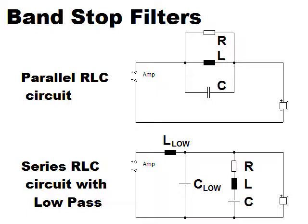A parallel RLC circuit only works as a bandstop filter if it is connected in series with the driver. A series RLC circuit only works if it is connected in parallel to the driver and a part in series with the driver already causing attenuation at the center frequency of the bandstop. Without an attenuating part in series it only has an effect on the impedance response.